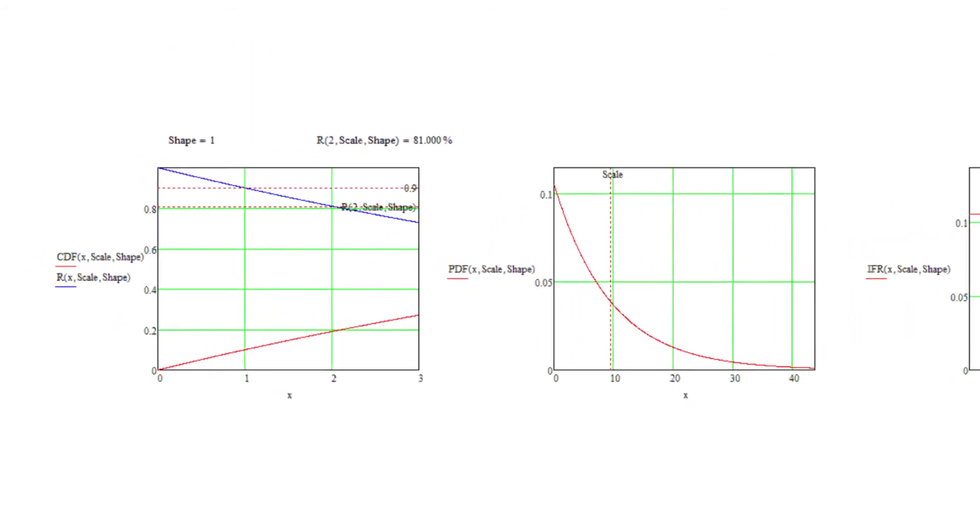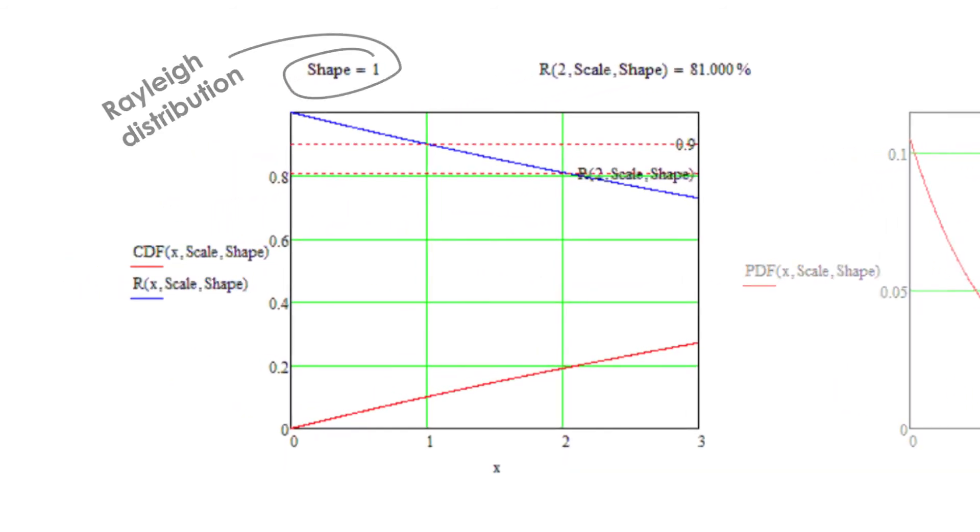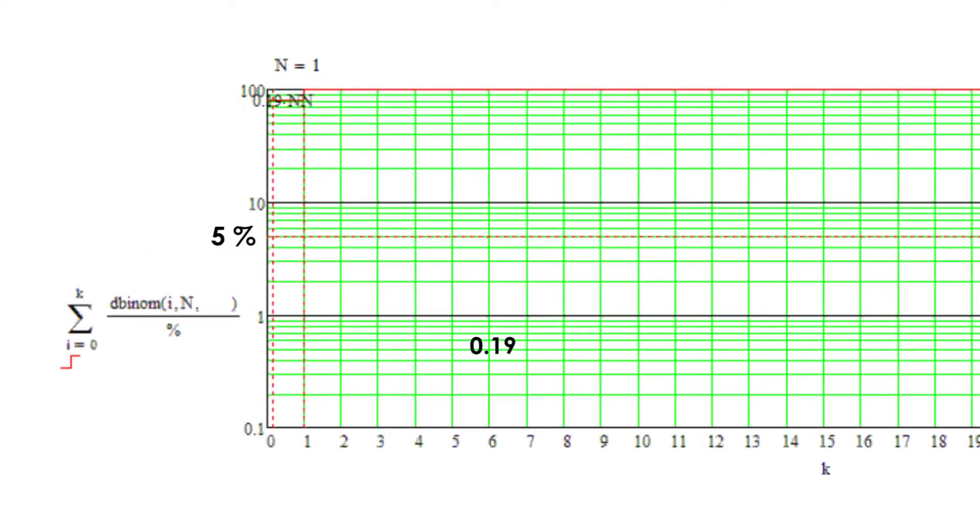With a constant failure rate, the reliability drops by 10% for every multiple of the life at 90%. This is an 81% reliability and 19% failure at twice the lifetime. Now we can calculate the needed sample size at 81% reliability instead of 90, which yields 15 parts for the 95% confidence and zero failure.